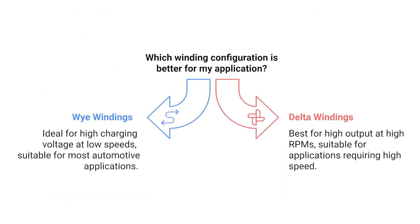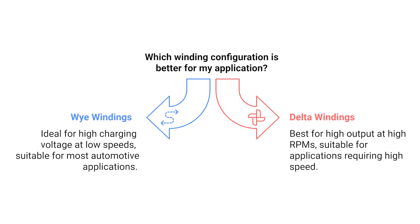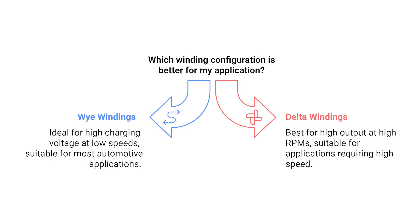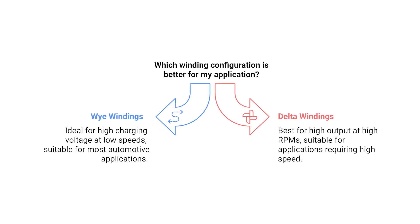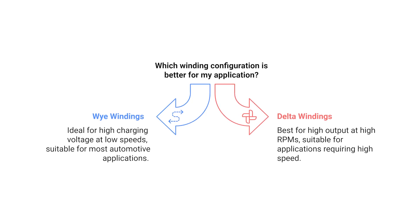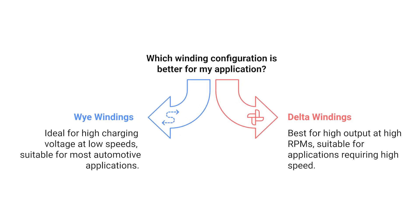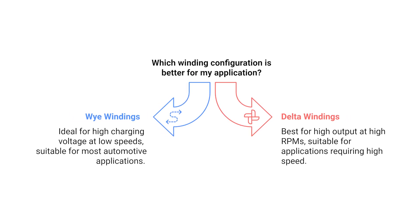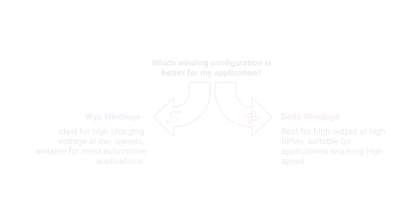So, which configuration is better? It depends on your needs. If you need high charging voltage at low speeds, like in most automotive applications, Y windings are the way to go. But if your application demands high output at high RPMs, delta windings are the better choice. To recap, Y and delta windings each have unique advantages depending on speed and current output requirements. Understanding these configurations helps engineers design alternators for specific performance needs.